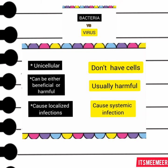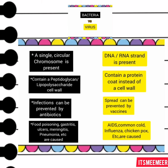Bacteria cause localized infections, while a virus causes systemic infections. A single circular chromosome is present in a bacteria, while a DNA or RNA strand is present in a virus. A bacteria contains a peptidoglycan-like polysaccharide cell wall, while a virus contains a protein coat instead of a cell wall.